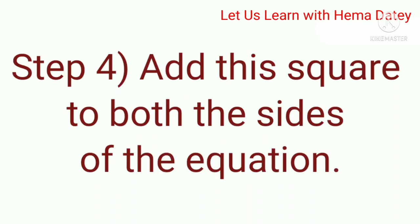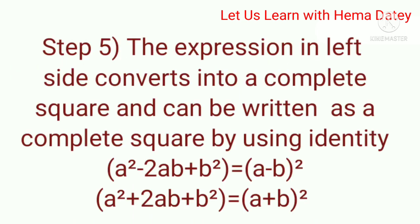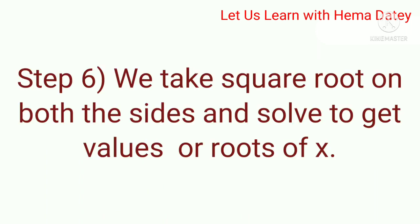In Step 4, add this square to both sides of the equation. In the next step, the expression on the left side converts into a complete square, using the identity a² - 2ab + b² = (a - b)² or a² + 2ab + b² = (a + b)². In the next step, we take the square root on both sides and solve to get the values or roots of x.